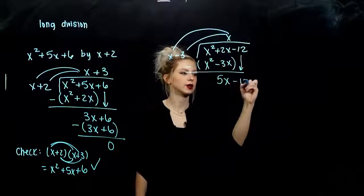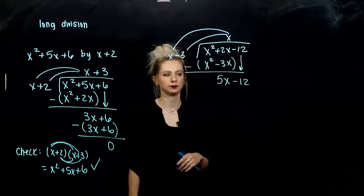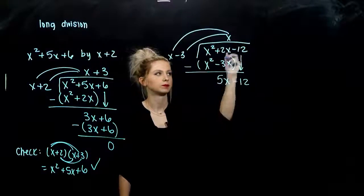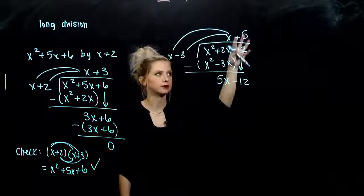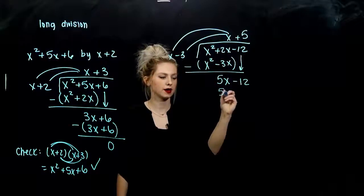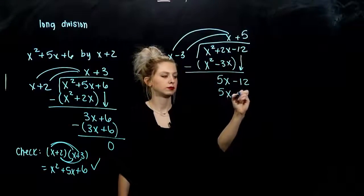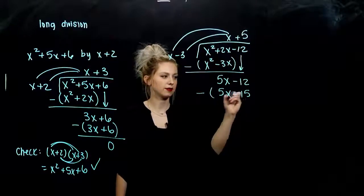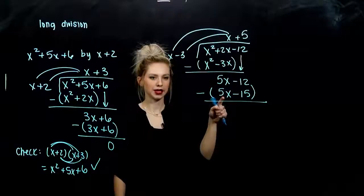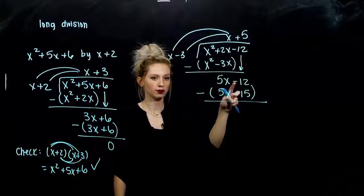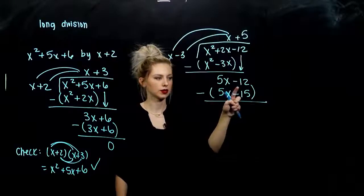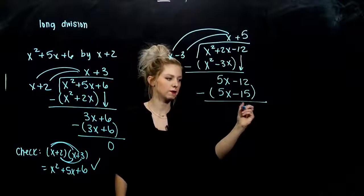We pull down the next term — always have the same variables in a column. We have to ask: what do I need to multiply x by to get me here? By 5. Same pattern — take this term times each of these and write them below. So 5 times x gives me 5x, and 5 times negative 3 gives me negative 15. We're subtracting off an entire quantity. 5x minus 5x — gone. Negative 12 minus negative 15: negative 12 plus 15 gives me 3 left over.